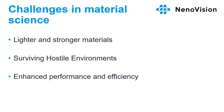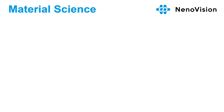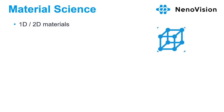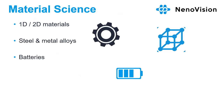In electronic devices, in order to improve performance and memory while reducing size, understanding intrinsic properties on an atomic scale is crucial. Today we'll cover examples in low-dimensional materials, steels, metal alloys, batteries, ceramics, and polymer composite materials.